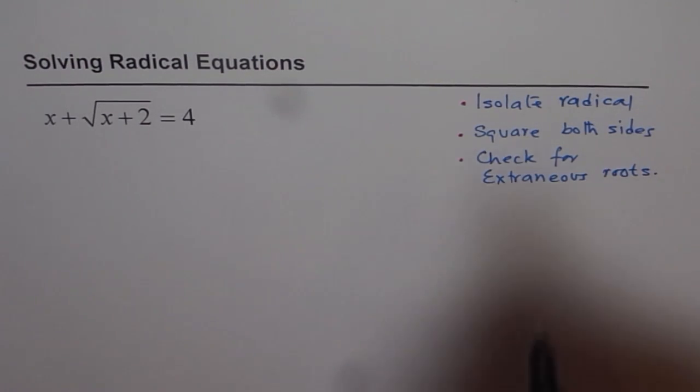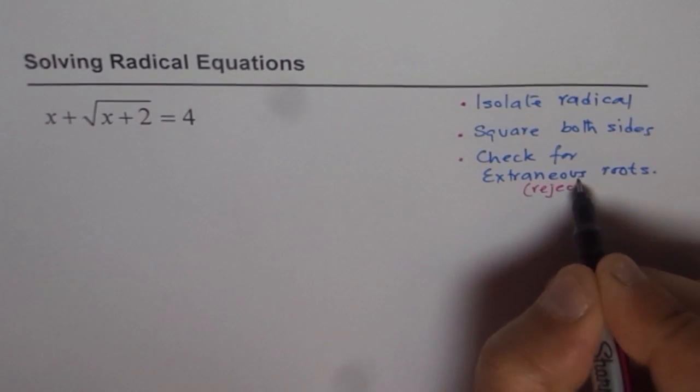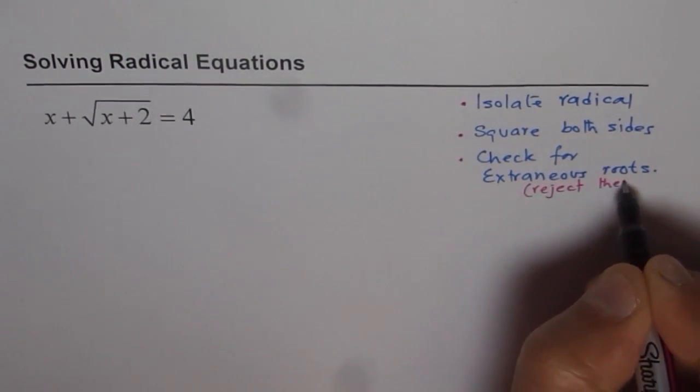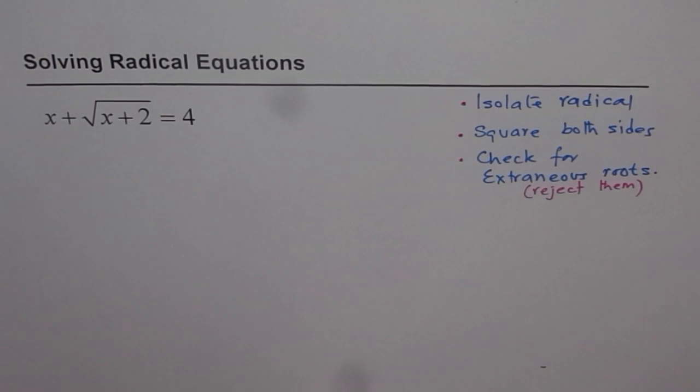So, these extraneous roots should be rejected. And then write down your solution. So, these are the steps which should be followed to solve any radical equation. Let's follow them one by one.